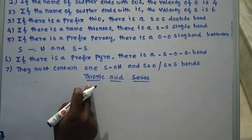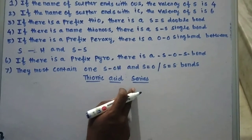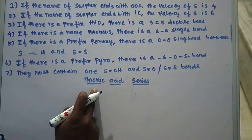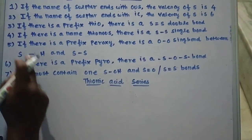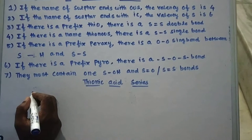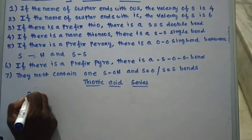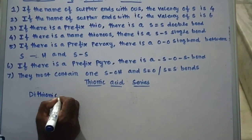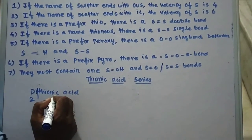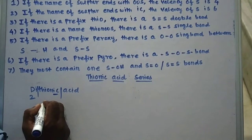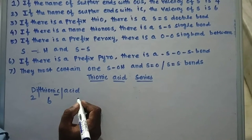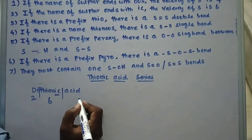Now we are going to discuss the thionic acid series. The thionic acid series must contain an S–single bond–S bond, according to rule number 4. First, we will take dithionic acid. Di means 2; the name ends with -IC, so the valency of sulfur is 6. The formula of dithionic acid is H₂S₂O₆.